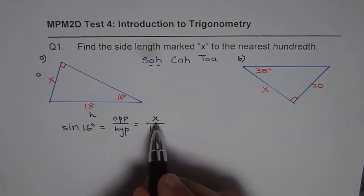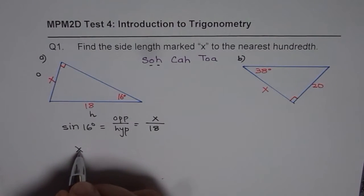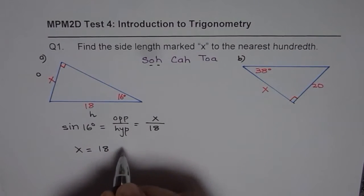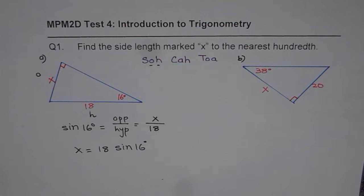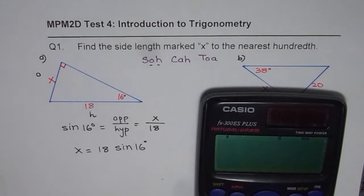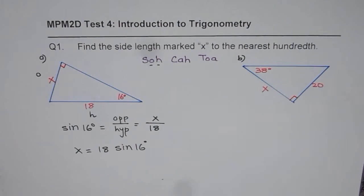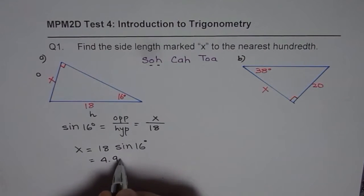Now we can rearrange and find what X is. So X is 18 times sine of 16. We can write X equals 18 times sine of 16 degrees. Now let us use our calculator to find the answer. So X is 18 times sine of 16 degrees, which equals 4.961.